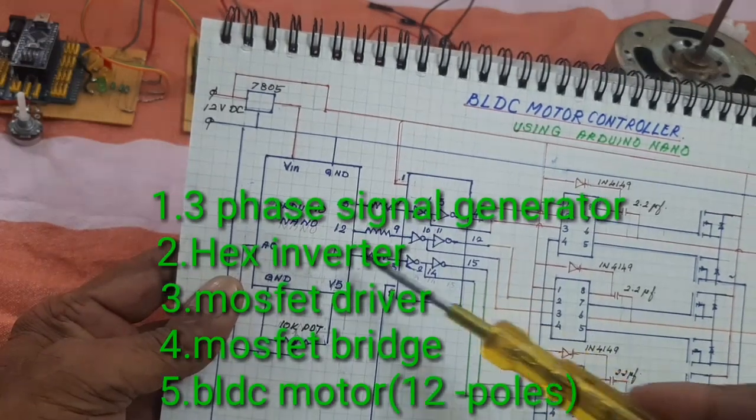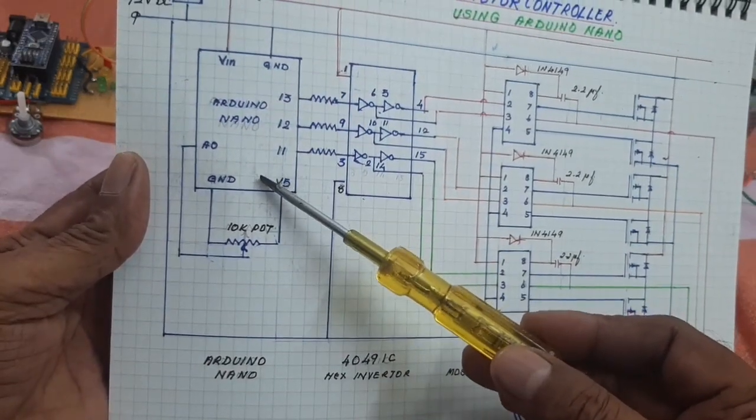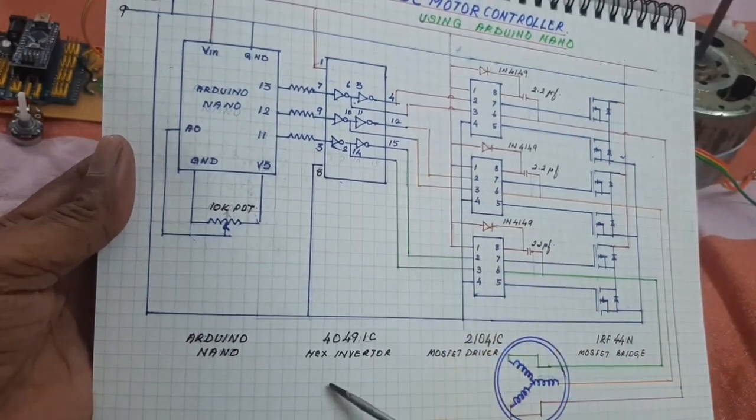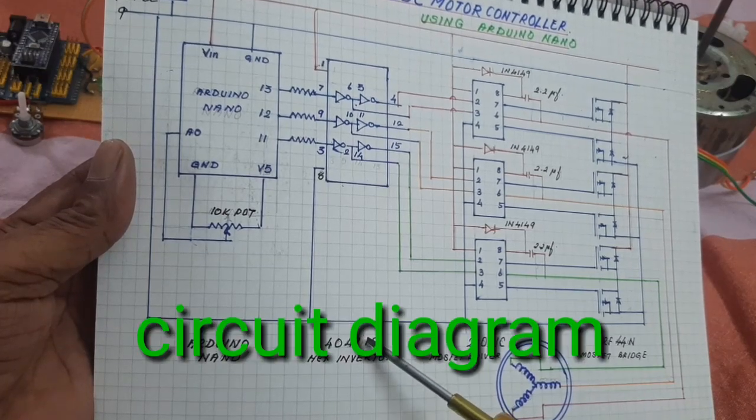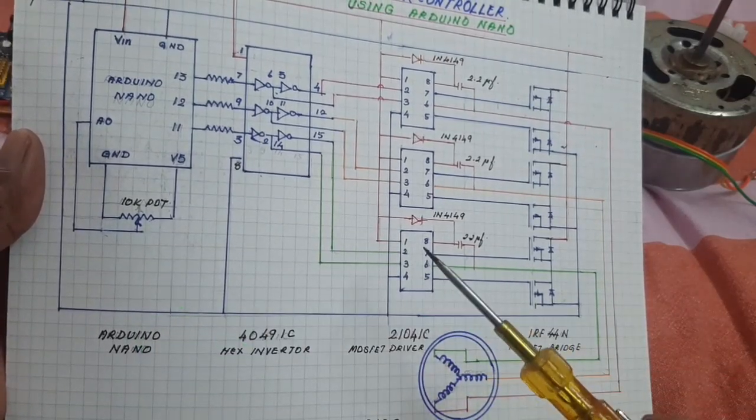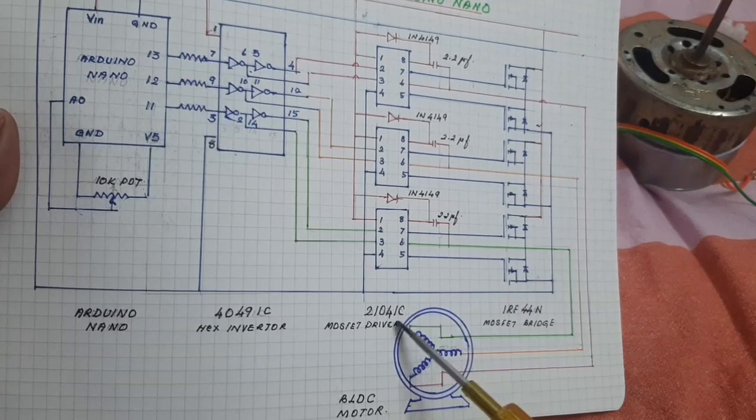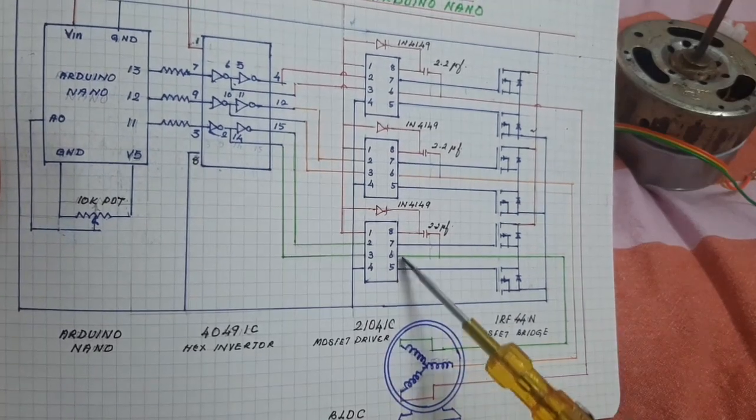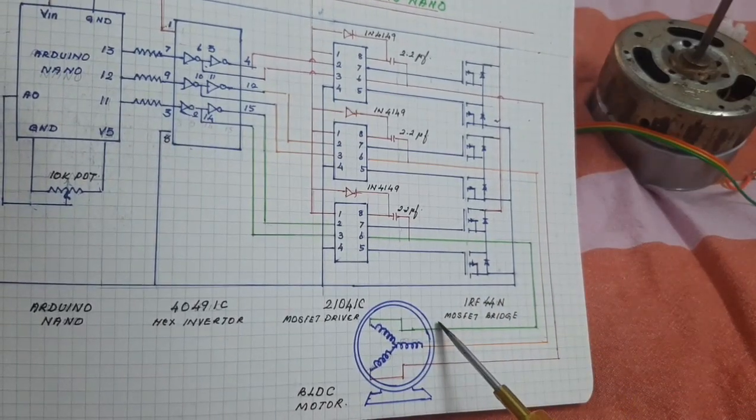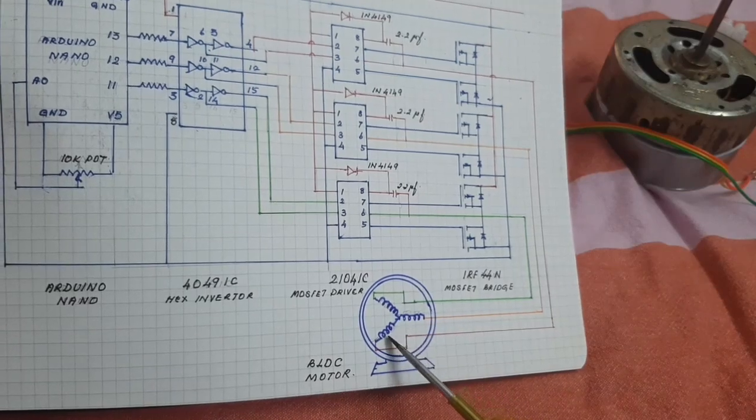First signal, three-phase signal generator using Arduino Nano and the three-phase signal is converted to high-low signal by using hex-inverter that means 4049 IC and another stage the signal is given to the MOSFET driver IR2104 IC and then the output of the MOSFET driver is given to the MOSFET three-phase MOSFET bridge and then the output of the MOSFET bridge is given to the BLDC motor.